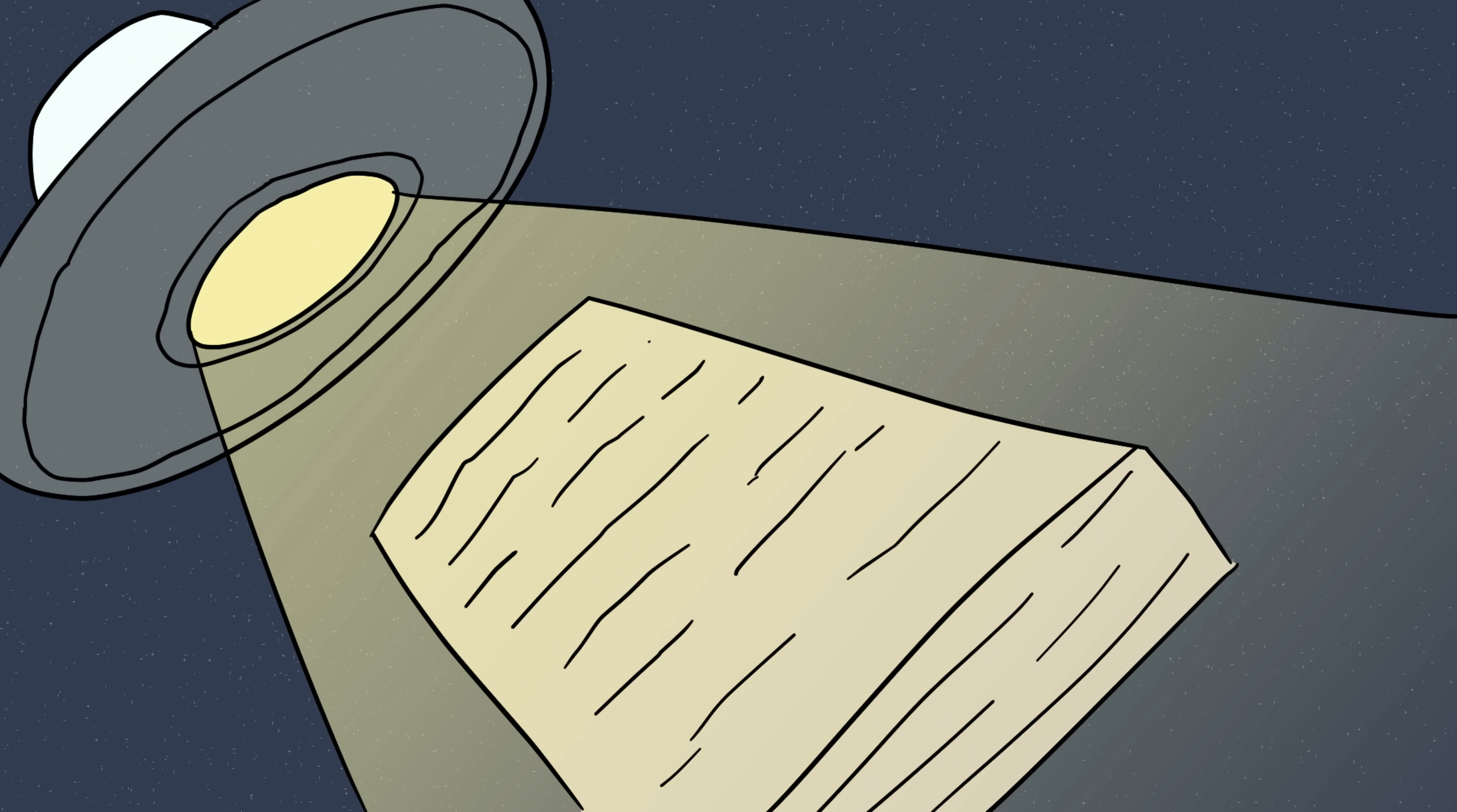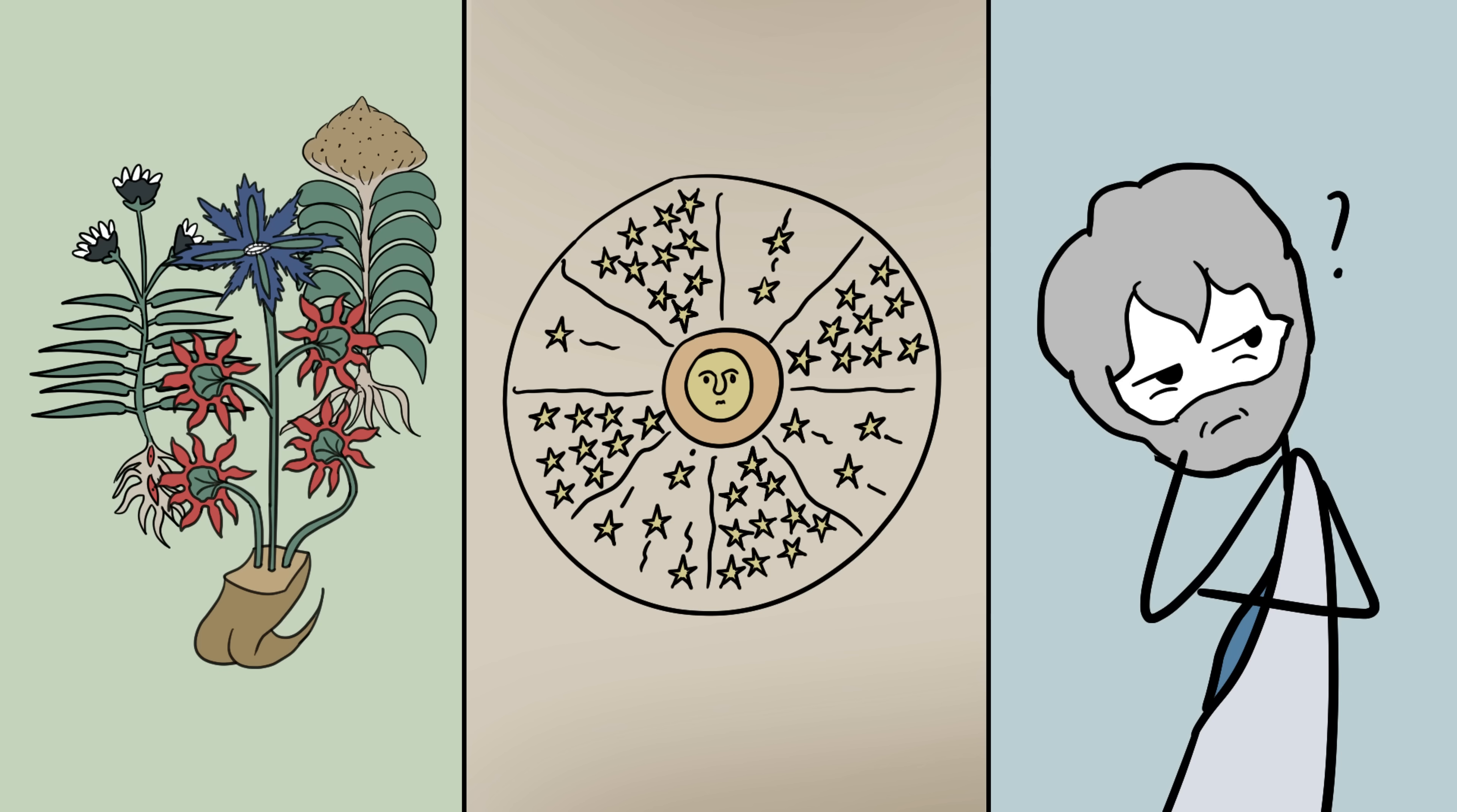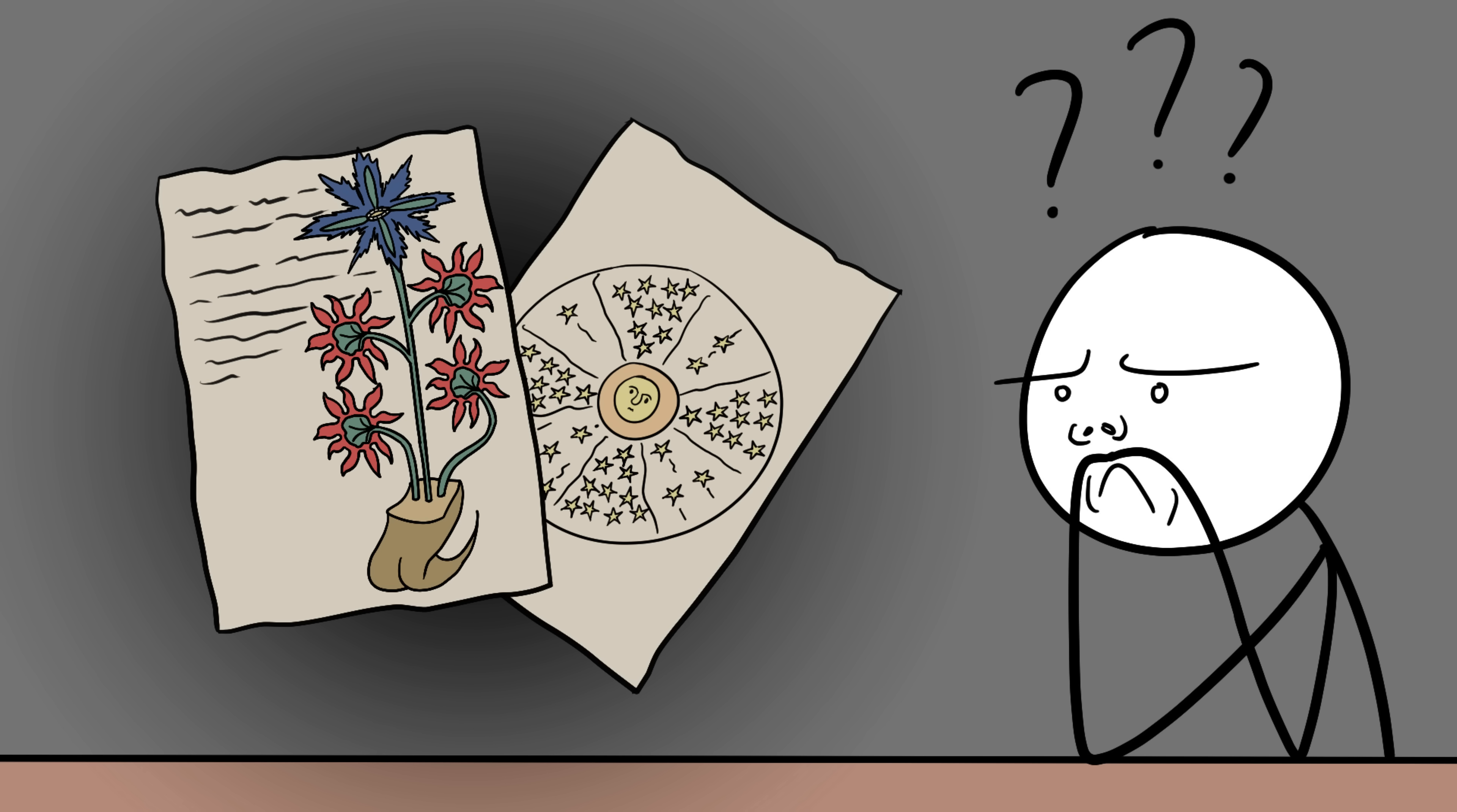Carbon dating places it in the early 1400s, meaning this mystery has been mocking us for six centuries. Every page feels like it's trying to tell us something crucial about medicine, astronomy, or maybe even philosophy. But until someone cracks it, the Voynich manuscript will remain the most frustrating riddle in book form. Dangling meaning just out of reach.